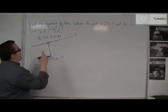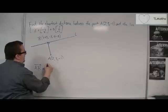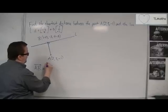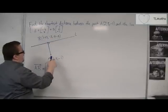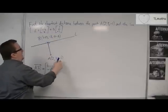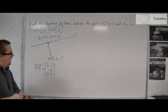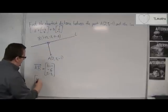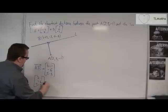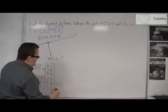AB is B minus A. So: 1 plus lambda minus 2 gives lambda minus 1. Then minus 3 minus 3 gives minus 6. And 4 minus lambda minus (minus 1) gives 5 minus lambda. So that's vector AB. And I know that AB dotted with (1, 0, -1) will equal zero.